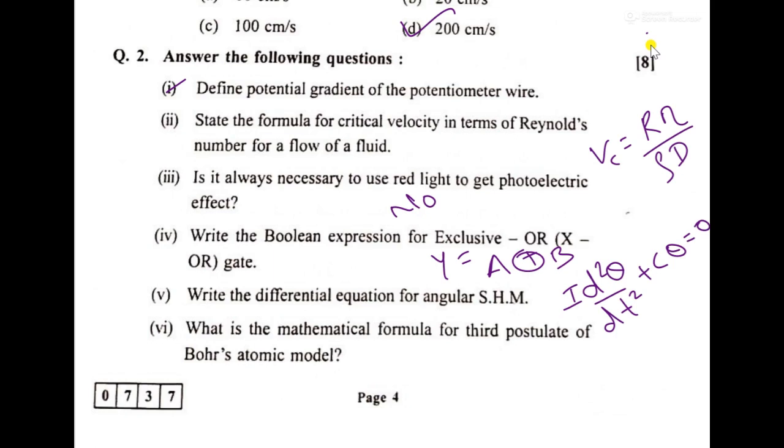Then what is the mathematical formula for third postulate of Bohr's atomic model? So it could be whatever you take is final minus initial of this and then H mu.